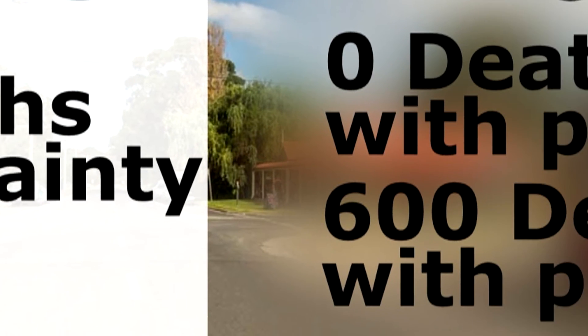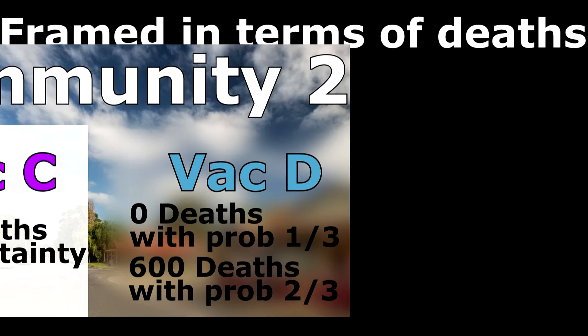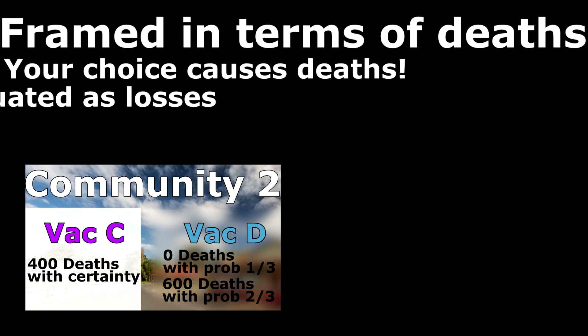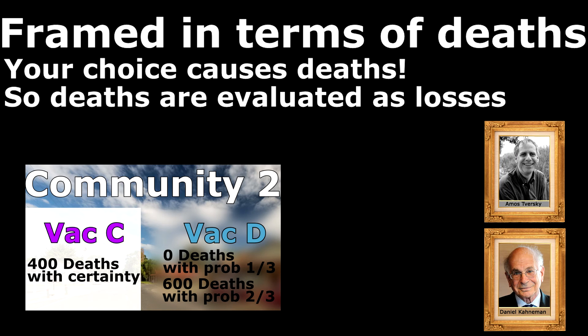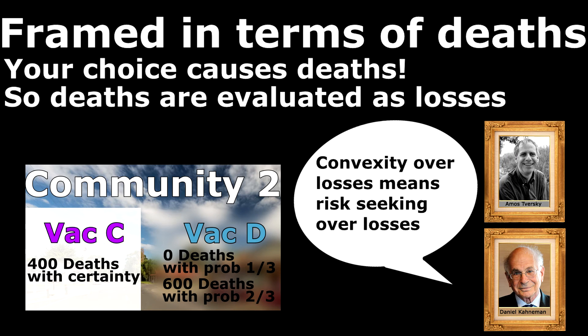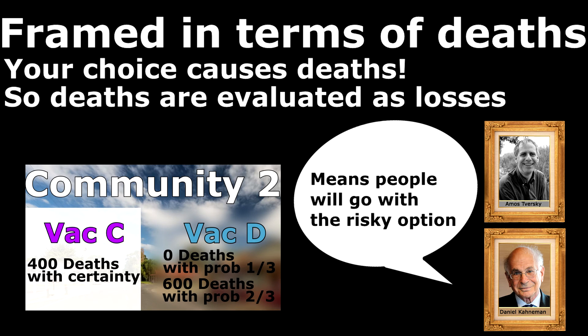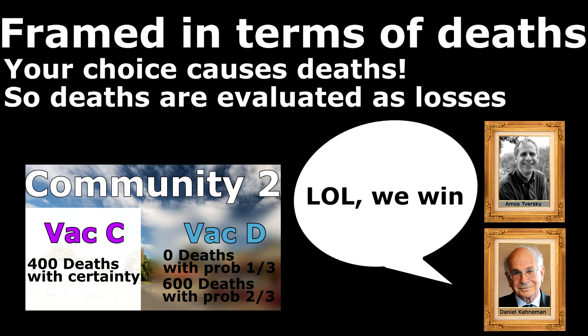In round two, you made the choice between letting 400 people die and letting no one die with a probability of one third. This question was framed in terms of deaths, and thus each death is evaluated as a loss. Under Kahneman and Tversky's proposition, we would expect people to be drawn to option D — remembering that individuals are risk-seeking over losses — and this was supported by their findings, with 78% choosing the risky option D over the concrete option C.